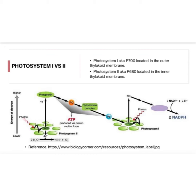Moving over to photosystem 1, the same thing happens again. A photon from light energy hits the chlorophyll molecule, causing it to become excited. Because of this excitation, it absorbs the electron coming in from photosystem 2. The electron becomes excited and moves to a higher energy level. Photosystem 1 becomes electron deficient and gets an electron from the adjacent photosystem 2, which had the electron coming down the electron transport chain.